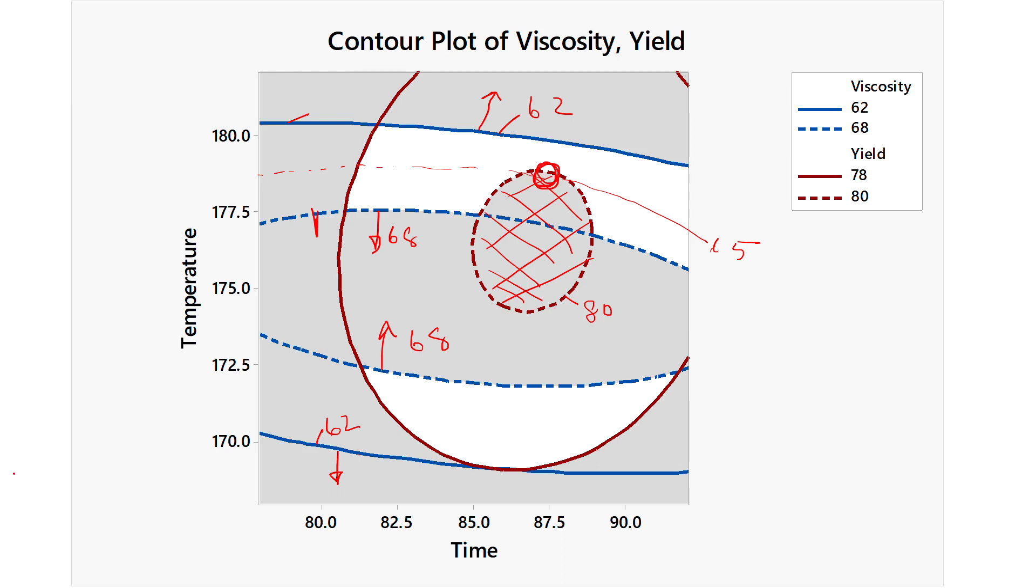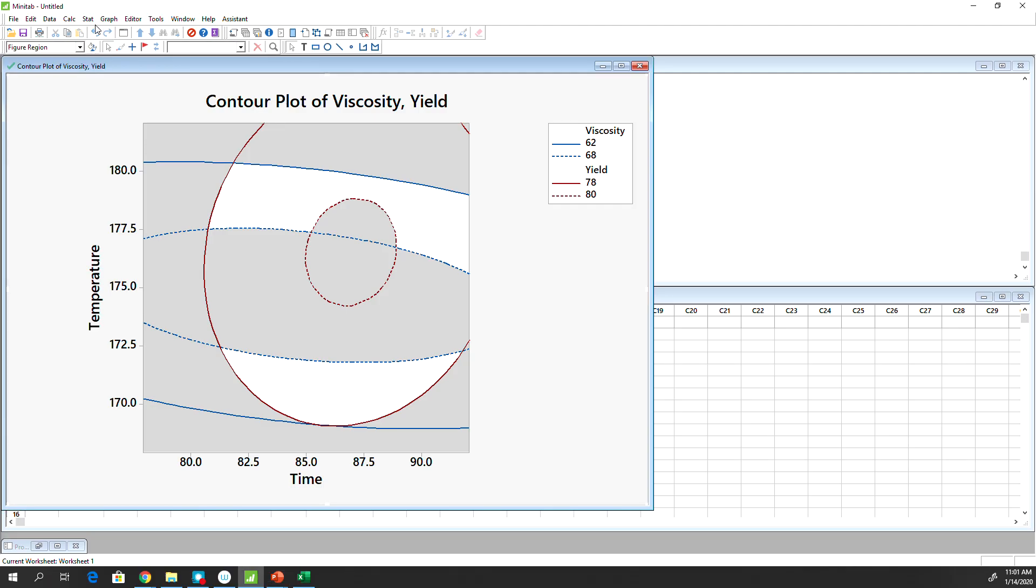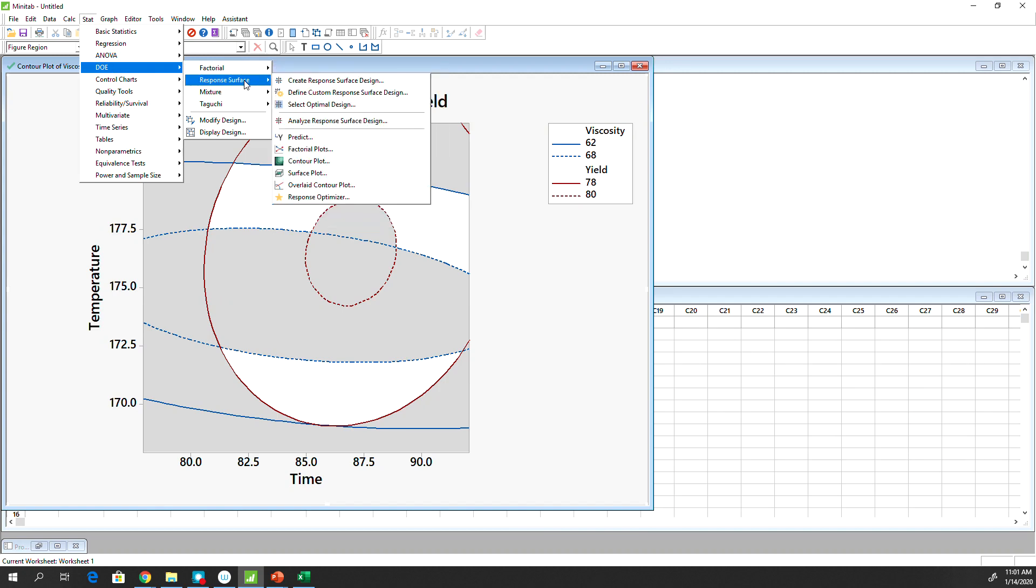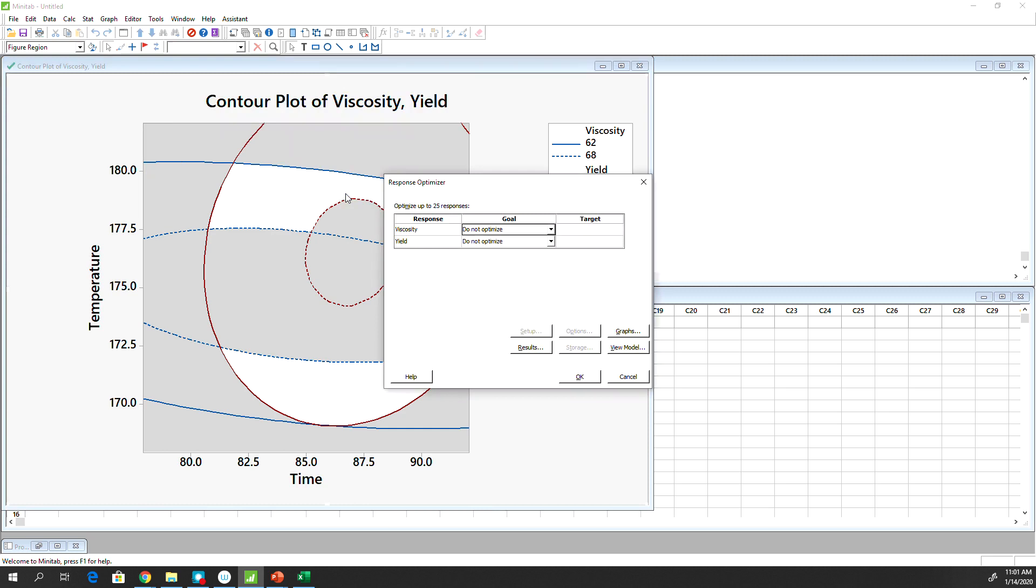Let's run the optimizer in Minitab and see what's the exact value for the time and temperature for the best output of humidity and viscosity. So we're going to do response surface optimizer. And then viscosity will shoot for a target value 65. And then the yield, which is, we want to maximize the yield.